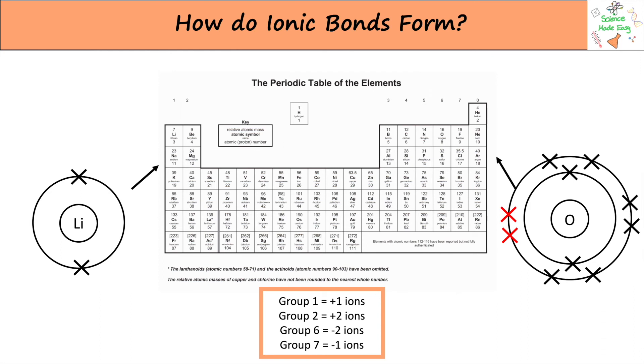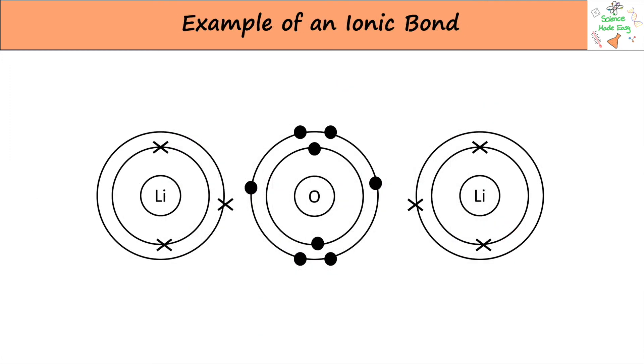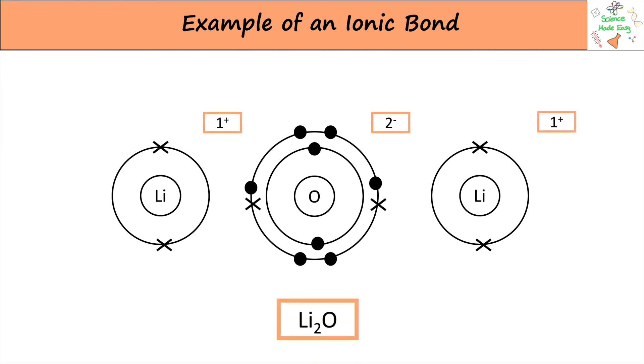Here is an example of an ionic bond being formed. Oxygen needs two electrons to become stable. Each lithium atom can only lose one, so oxygen bonds with two to get the full number of electrons it needs. This means that oxygen becomes negatively charged and the lithium atoms become positively charged.